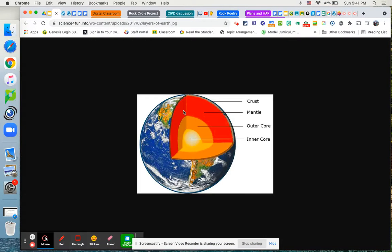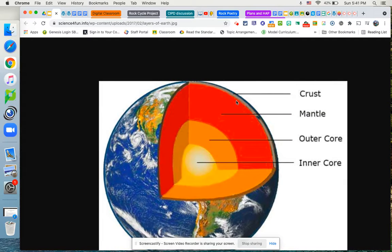So if I bring up a diagram of the Earth's layers, we live on this outermost layer, the crust, which is the outermost. We live on it. It surrounds the Earth.